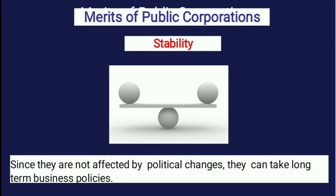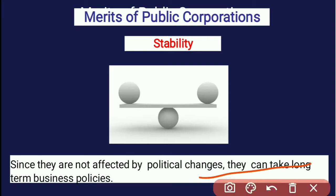Next is stability. Public corporations are stable since they are not affected by political change. Even with a change in government, there is no difference in their existence — they continue working continuously. They can take long-term business policies. That is why public corporation is called a stable form of government organization.